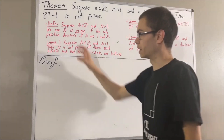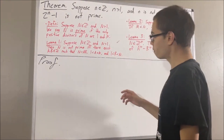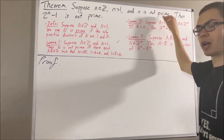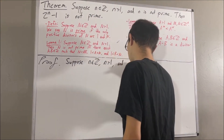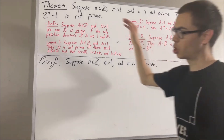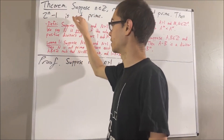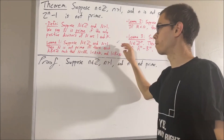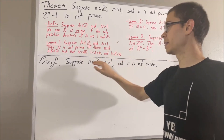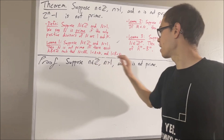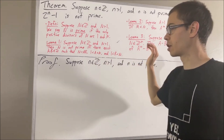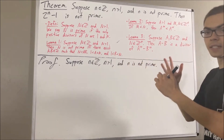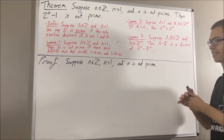So now, let's get into proving this theorem. To start out the proof, let's give ourselves an integer n which is greater than 1 and not prime. The whole goal is to show that 2 to the power of n minus 1 is not prime. These facts tell us that we can apply lemma 1: taking capital N to be n, since n is not prime, we have that there are integers a and b such that n equals a times b, where 1 is less than a is less than n and 1 is less than b is less than n.